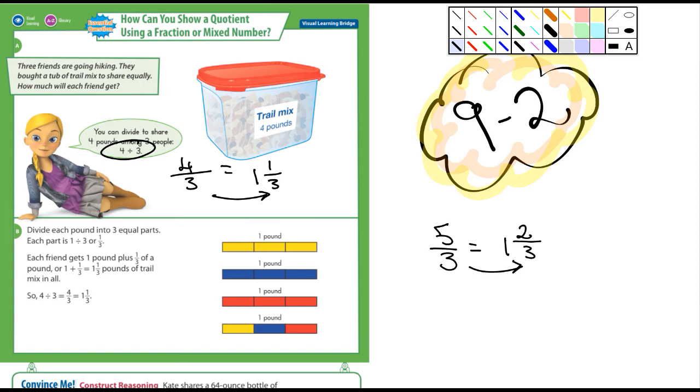So when you have an improper fraction where the numerator is larger than the denominator, you need to figure out how many times the denominator will fit into the numerator.